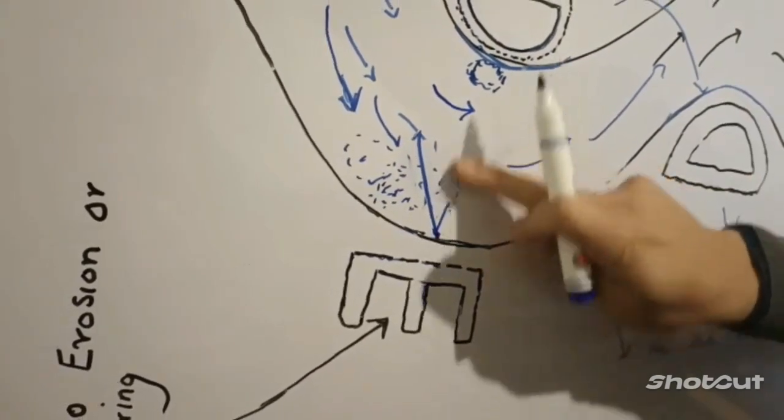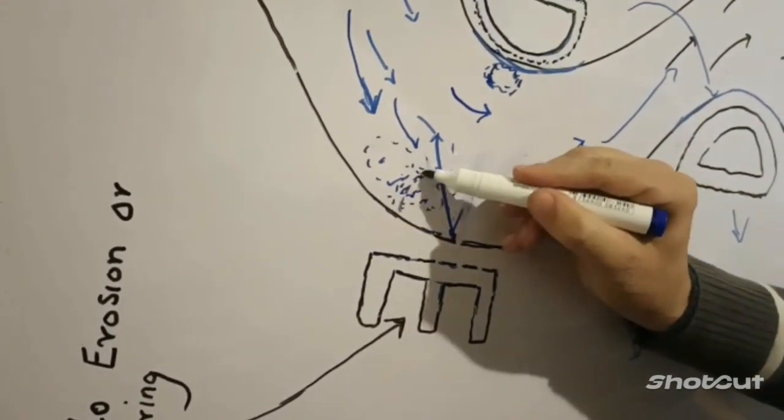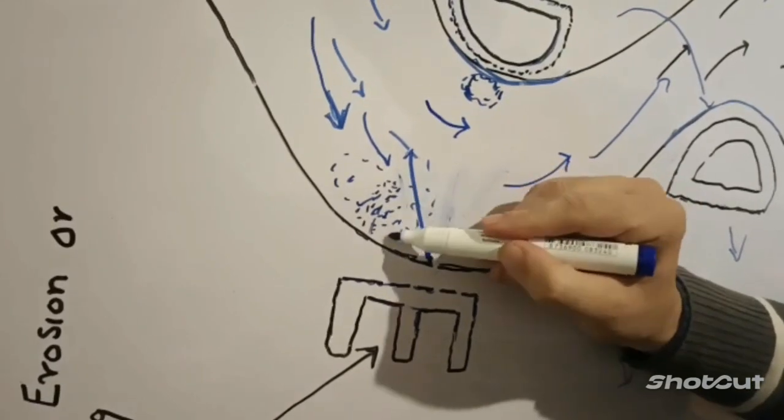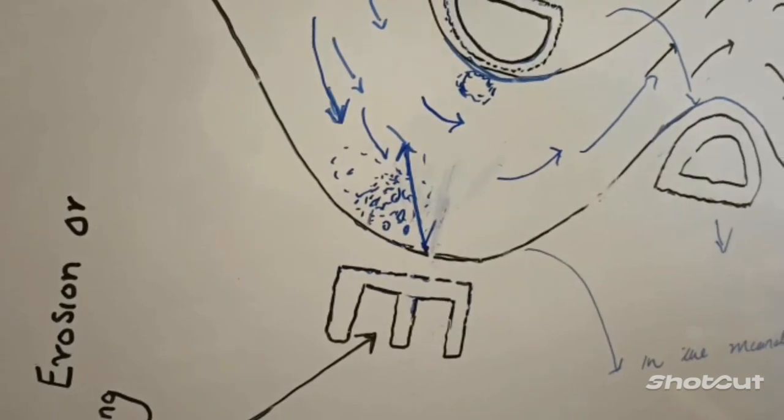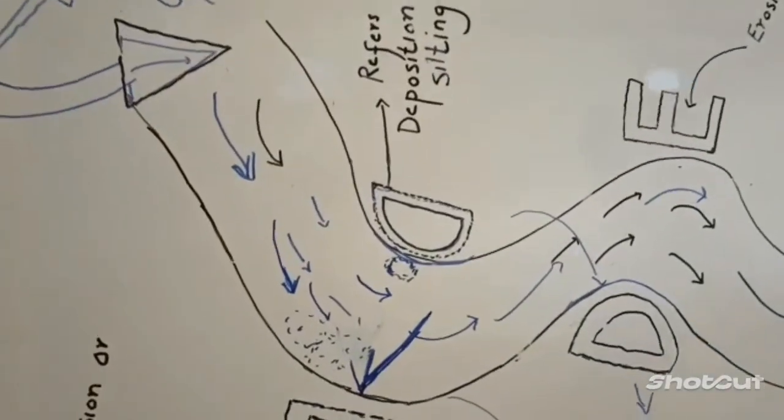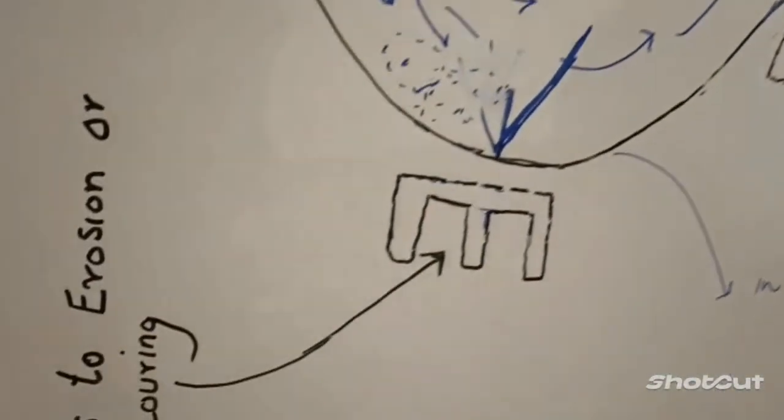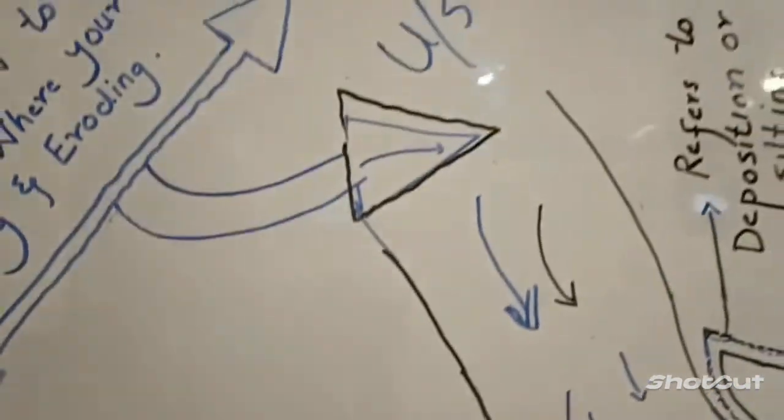Such a spur will be built. So when this spur is built, then silting pockets will form here. So this was all about today's discussion and today's topic. Thank you so much.